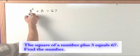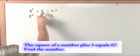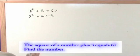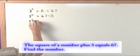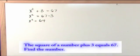The first thing we're going to do is get x squared by itself. So it's going to be 67 minus 3. We just subtract three from both sides. So x squared is going to be 67 minus 3, which is 64.